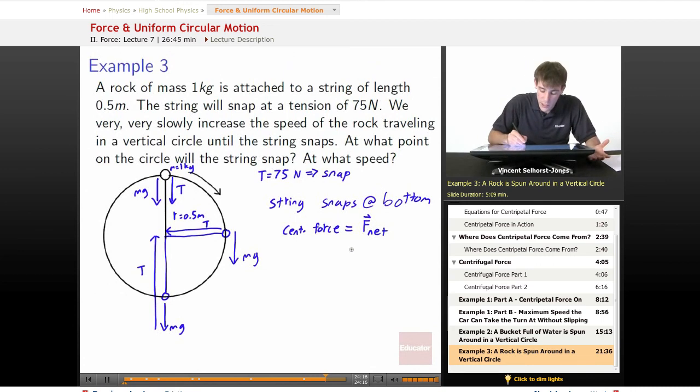What forces are acting on the rock? Well, we've got gravity pointing down and we've got the tension pointing up. So in this case, we'll make up positive. So we've got tension minus mg. So that's what the net forces are. And then centripetal force is going to be...